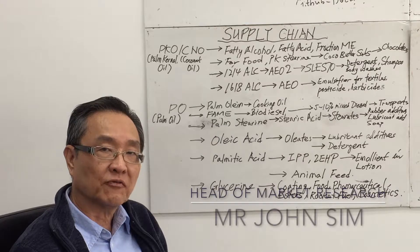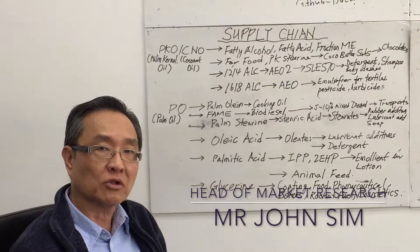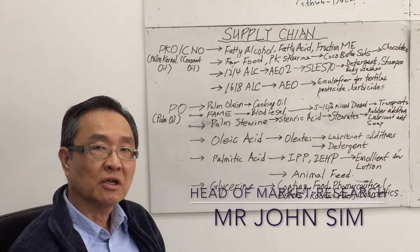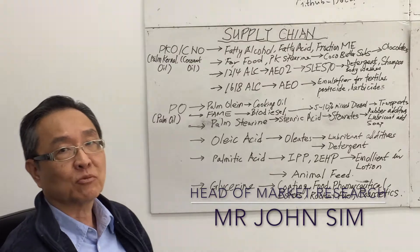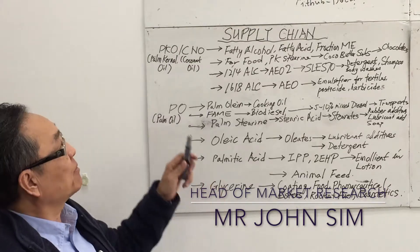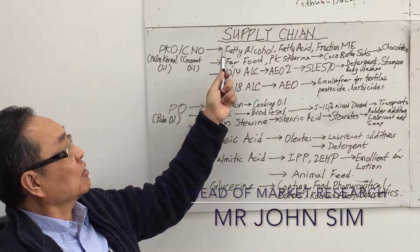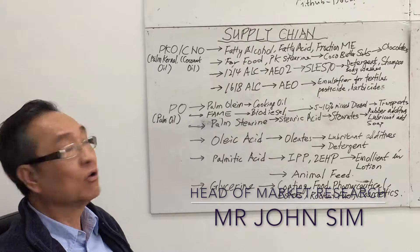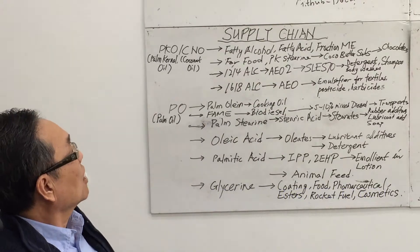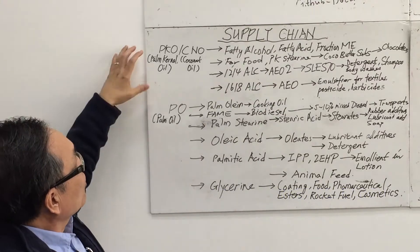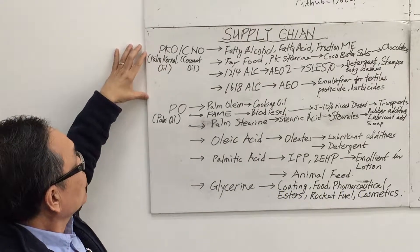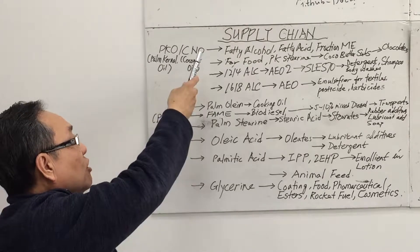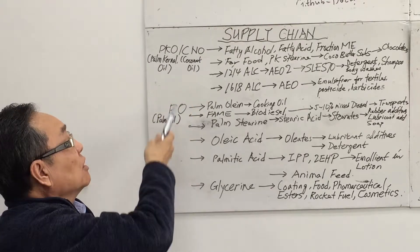Thanks for watching the first episode of the market information for oleochemicals. Now we come to the second episode — we are going to touch on the supply chain for oleochemicals. The oleochemical supply chain starts with the palm kernel oil, coconut oil, or palm oil.